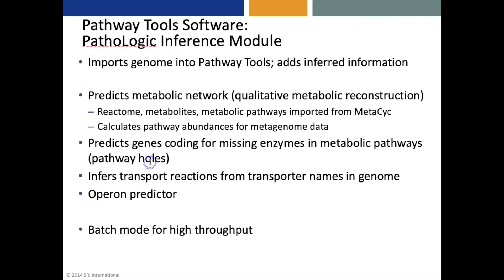It will also calculate pathway abundances for metagenome data. It will predict the genes coding for missing enzymes in metabolic pathways, which we call pathway holes. It will also infer transport reactions from the names of transporters in the annotated genome. And it has an operon predictor. Pathologic can be run interactively, but it can also be run in a batch mode for processing hundreds or thousands of genomes.